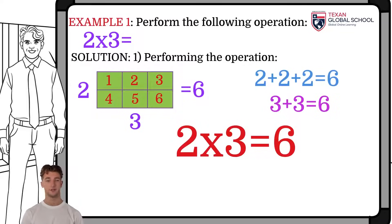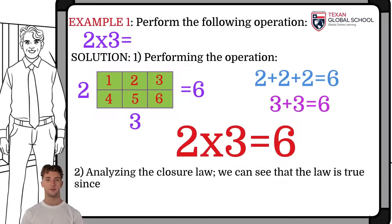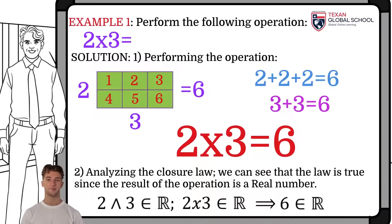So, two times three equals six. Analyzing the closure law, we can see that two and three are real numbers, and the result six of the product is also a real number.